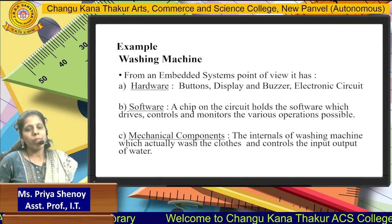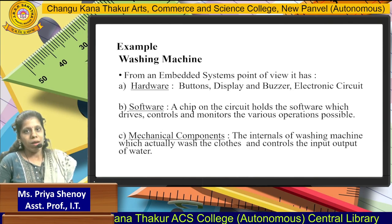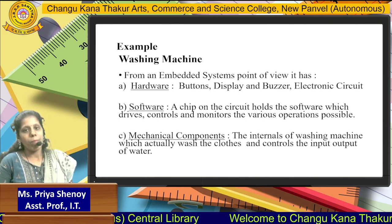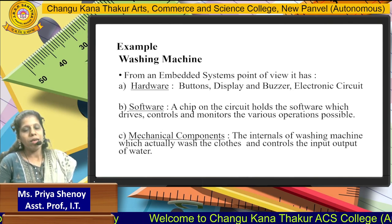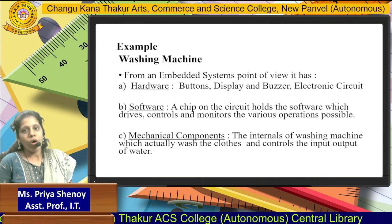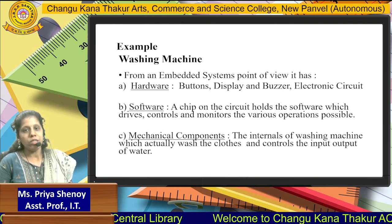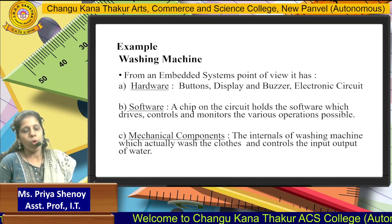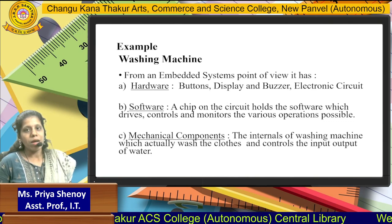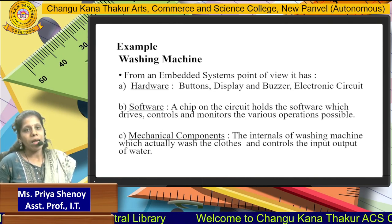The best example of an Embedded System is a washing machine. From an Embedded point of view, a washing machine will be containing hardware, software as well as mechanical components. Hardware comprises of the buttons, the display and the buzzer seen on the washing machine, and some electronic circuitry included in it. The software is in the form of a chip on the circuit, which contains some code that drives, controls, and monitors the various operations on the washing machine. The mechanical components comprise the internals of the washing machine which actually washes the clothes and controls the input and output of the water.